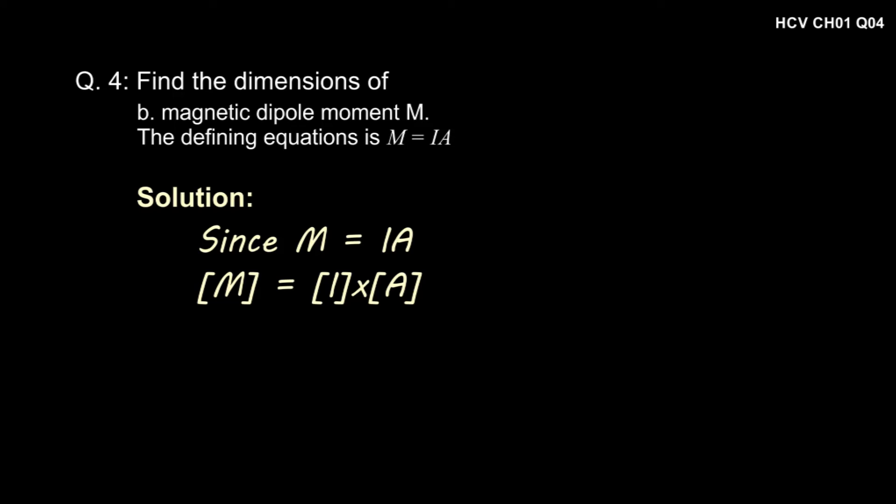Since M = I × A, the dimension of M must be the dimension of I times the dimension of A. We know that the dimension of I is A and the dimension of area is L², so the dimension of magnetic moment is AL².